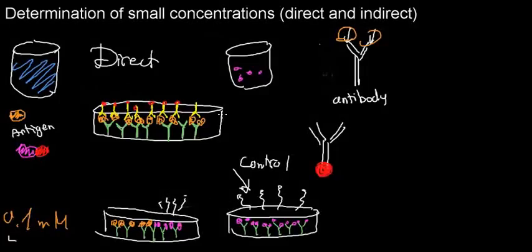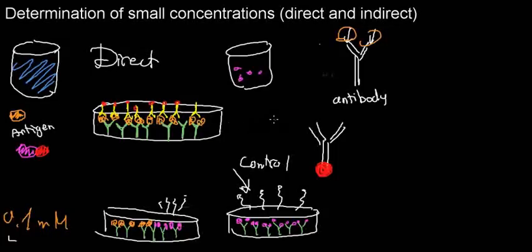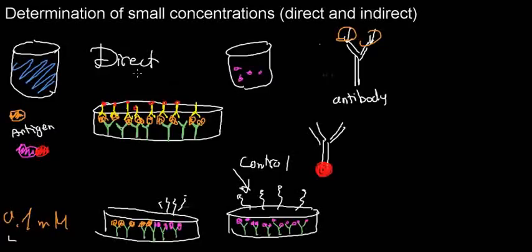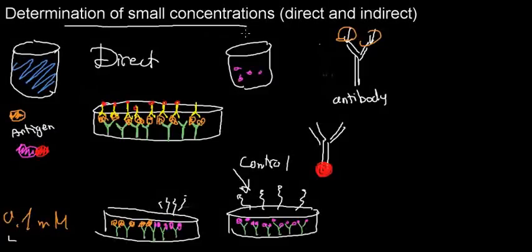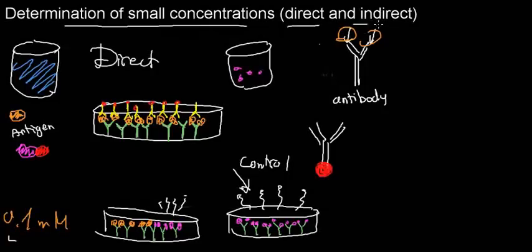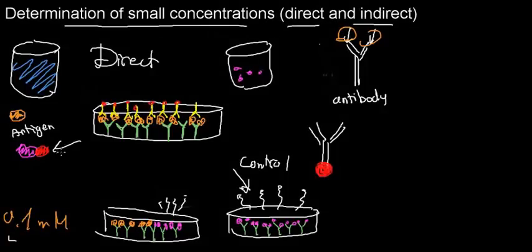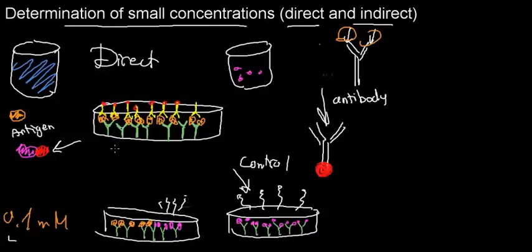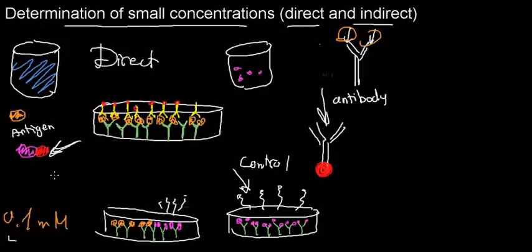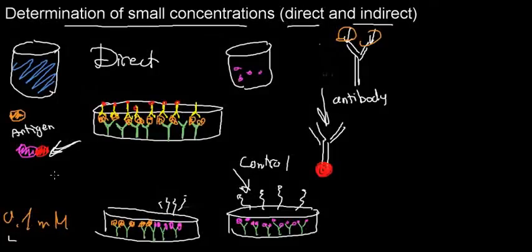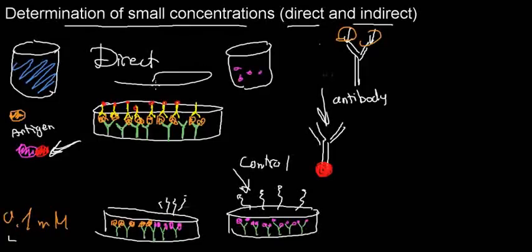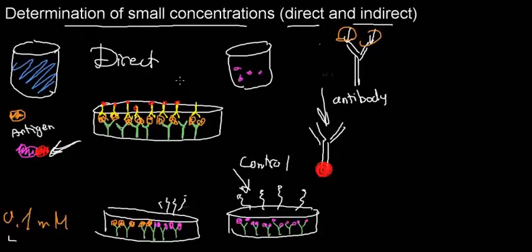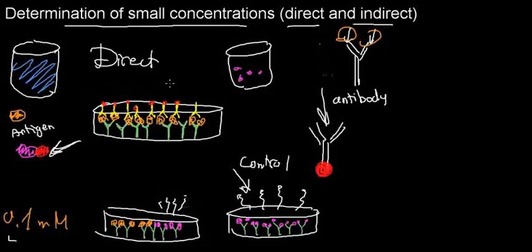I realize this is not very simple to draw in an exam, and I don't imagine they will ask you to. What you need to know is that you can determine small concentrations in a direct and indirect manner using radioactive isotopes — using radioactive isotopes to label either antibodies or different molecules. If the entirety of this process seems tedious or hard to understand, don't stress over it.